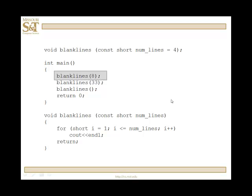So, how do you call it? Blank lines eight, blank lines 33, or blank lines with nothing. So, what are you going to get? Well, here you get eight blank lines. Here you get 33 blank lines. Here you pick up the default value, which is four.